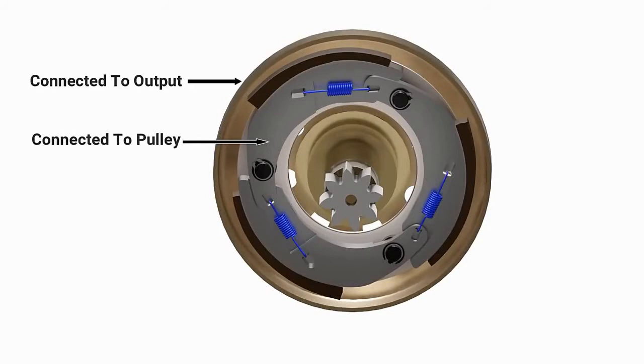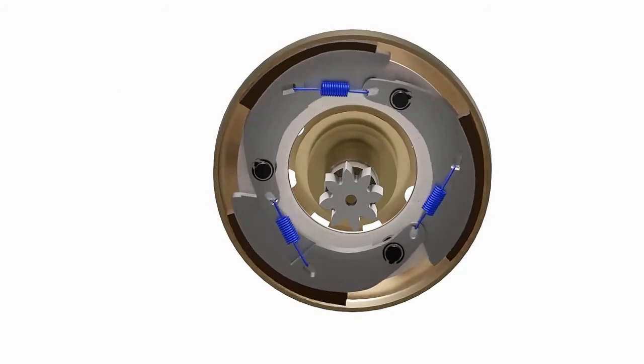The clutch housing is connected to the output gear. When sufficient speed is reached, the centrifugal force causes the arms to swing outward, and the friction pads engage with the clutch housing.